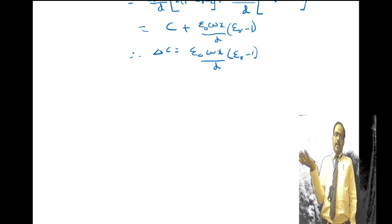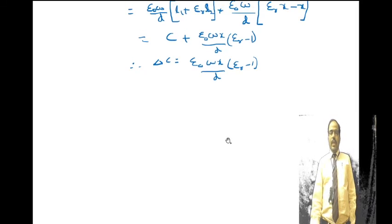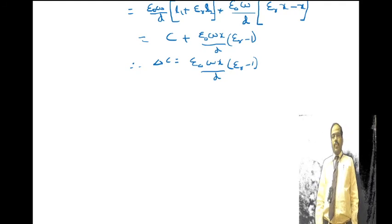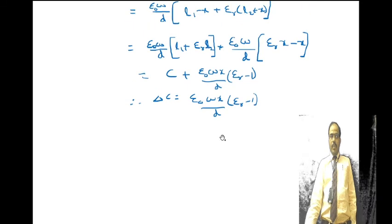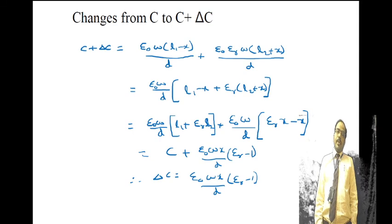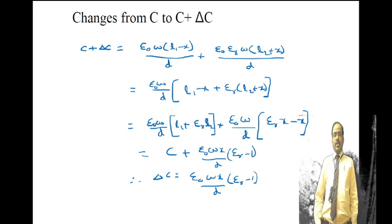We have discussed the measurement of displacement using capacitive transducers with three principles: change in overlapping area, change in distance, and change in dielectric medium. The same principles can be applied for measurement of force and pressure. The third principle — change in dielectric medium — can also be used for measurement of liquid level or gas levels in industrial applications. With this, the topic of capacitive transducers is complete.